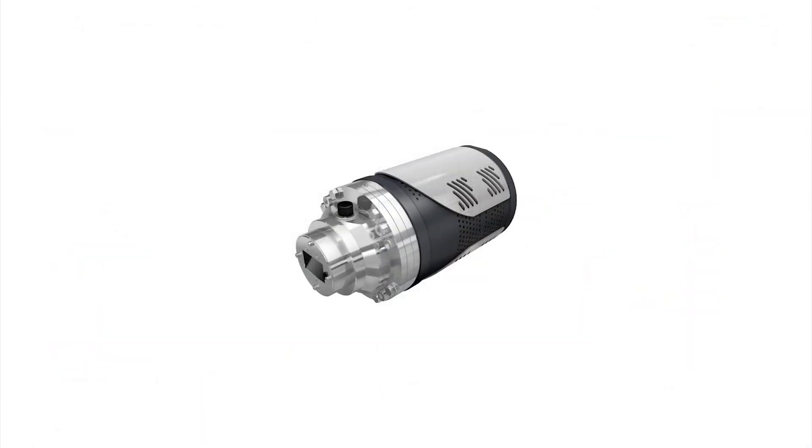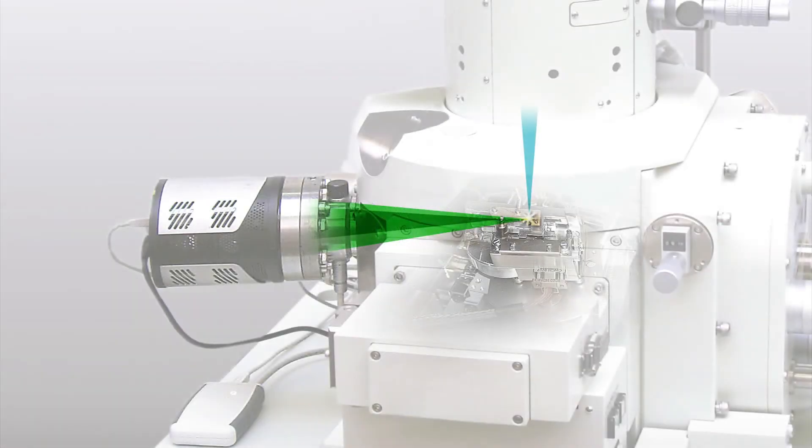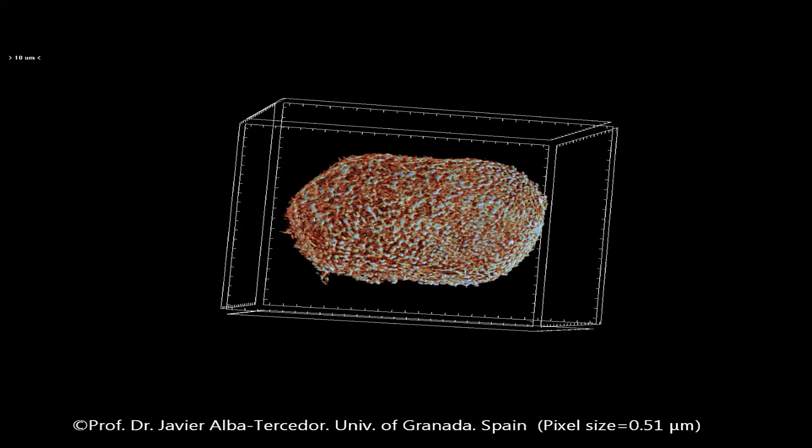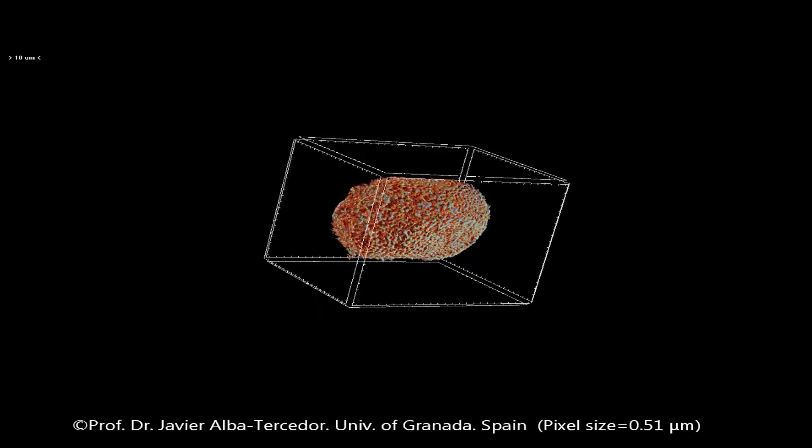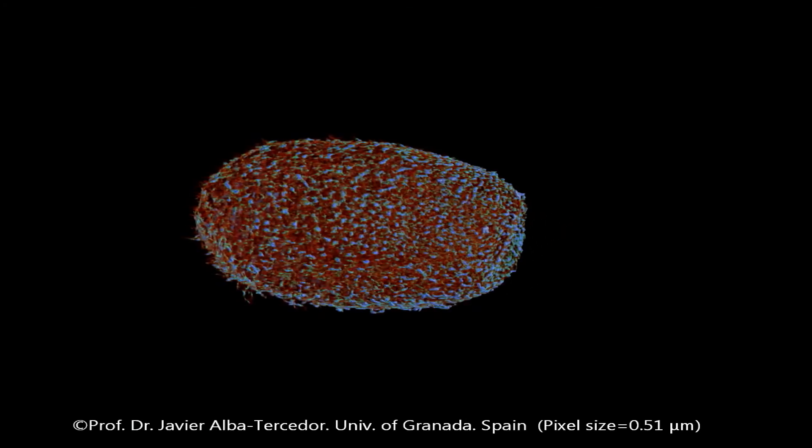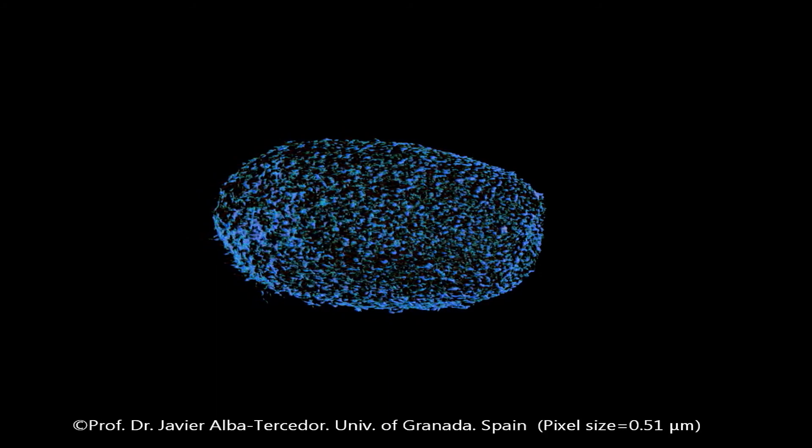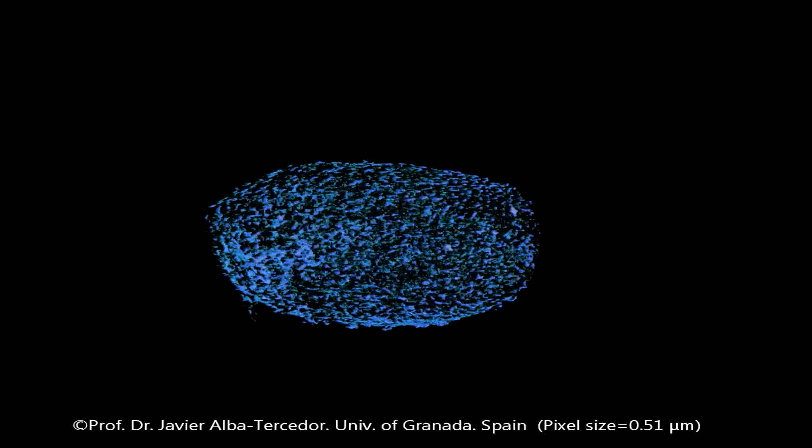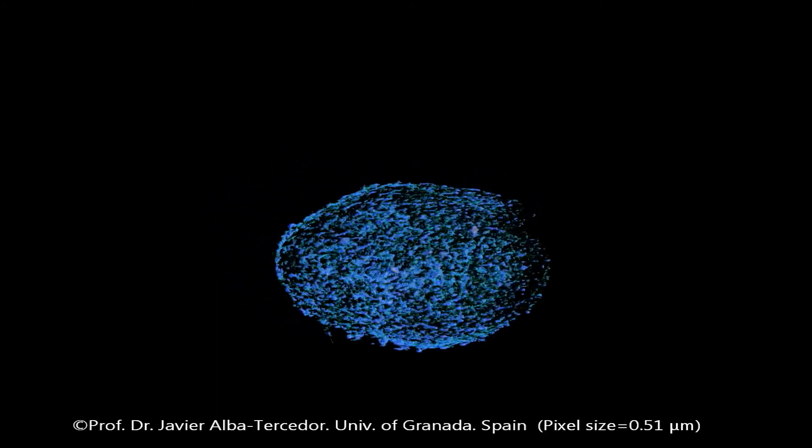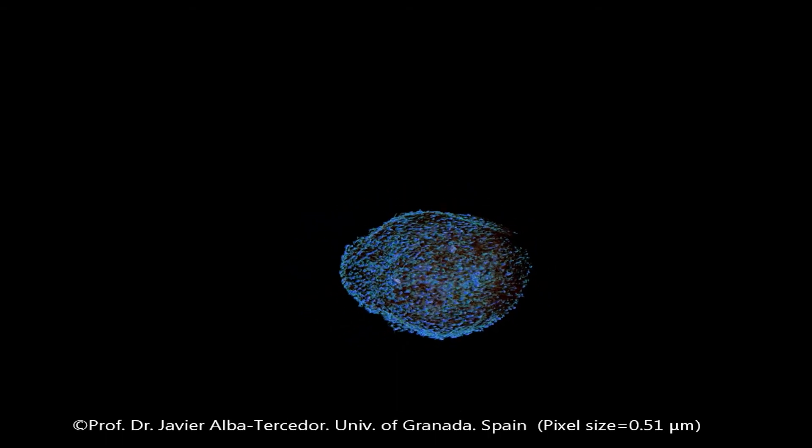To obtain information on a specimen's internal microstructure non-destructively and without any additional sample preparation you can use the microCT for the SEM. The scanning volume of your sample can be 4 mm in diameter with a maximum length of 10 mm. You can detect details down to 400 nm in size.